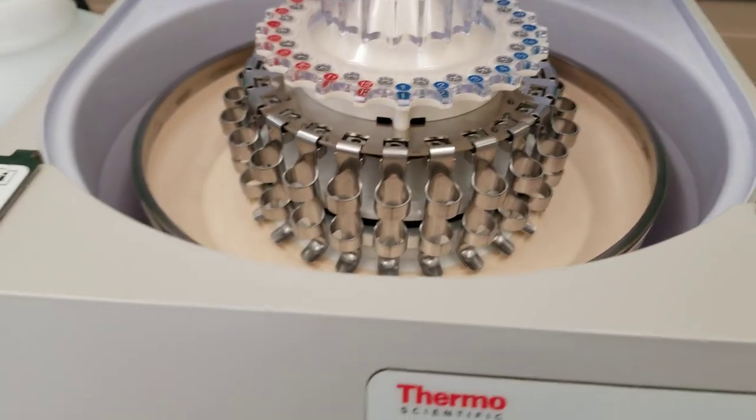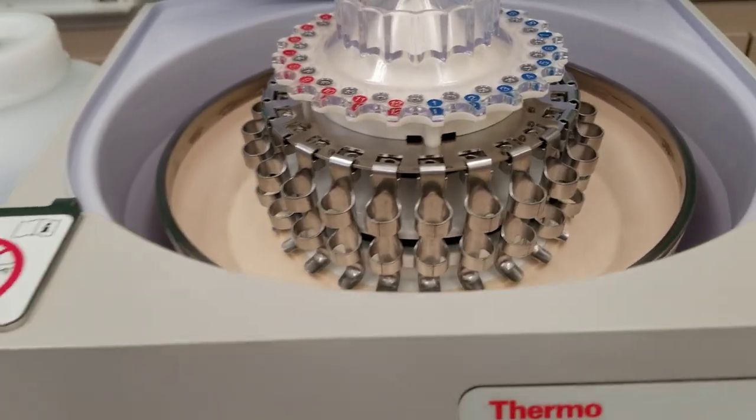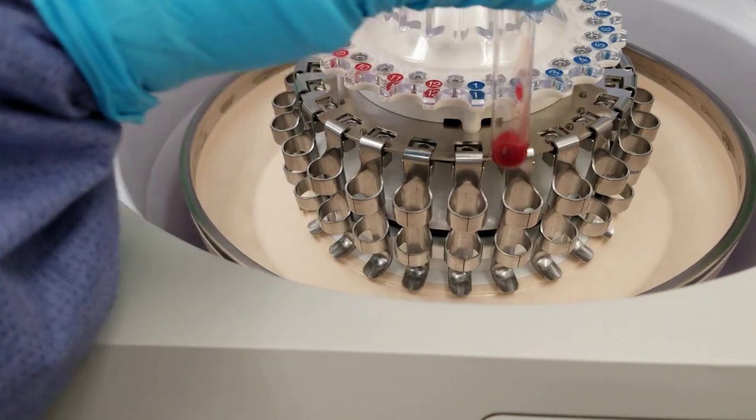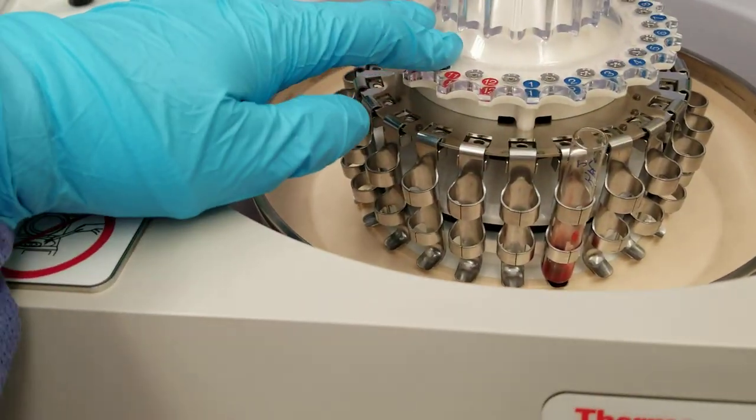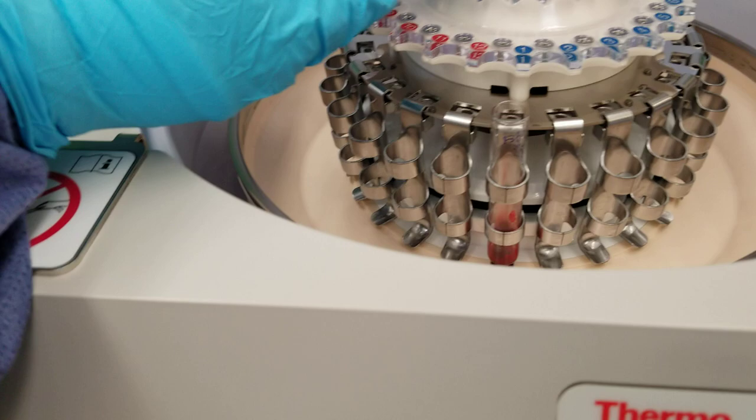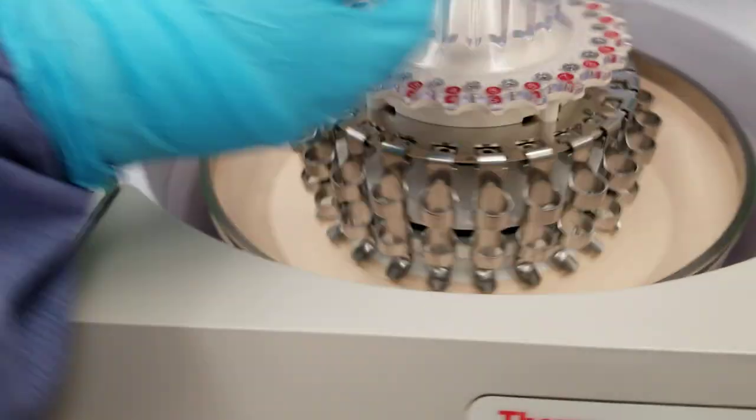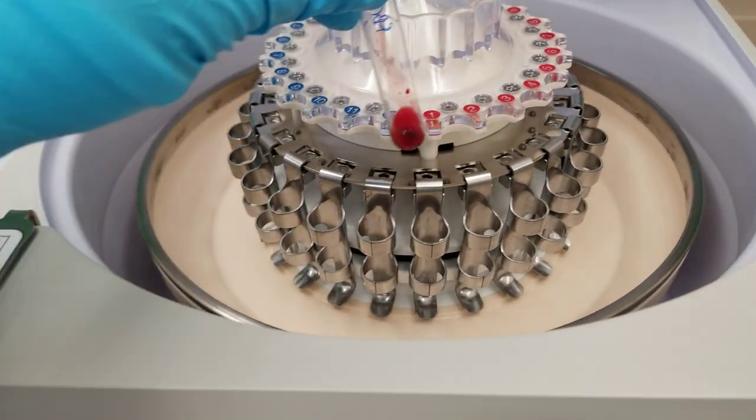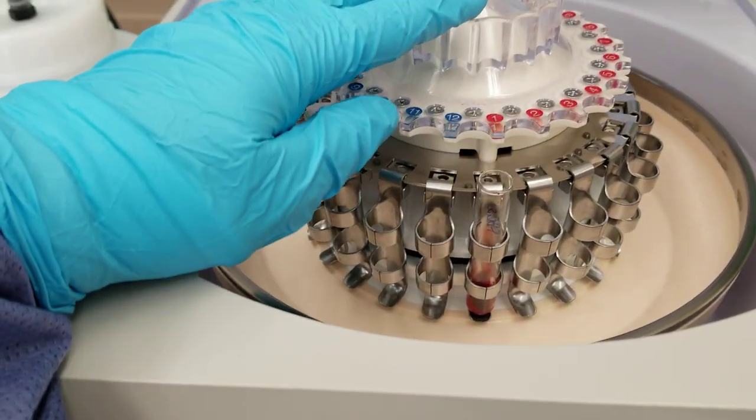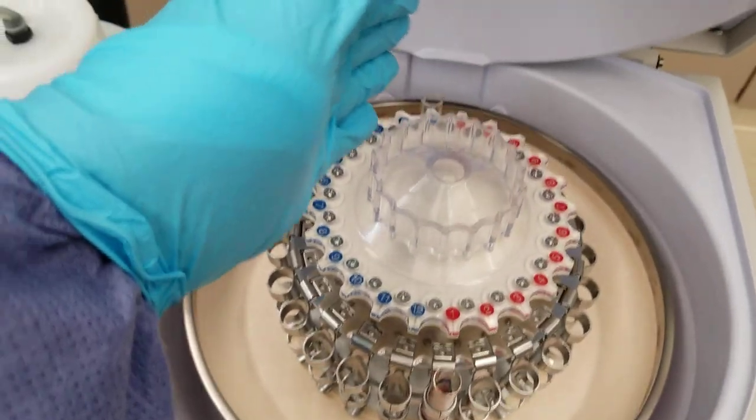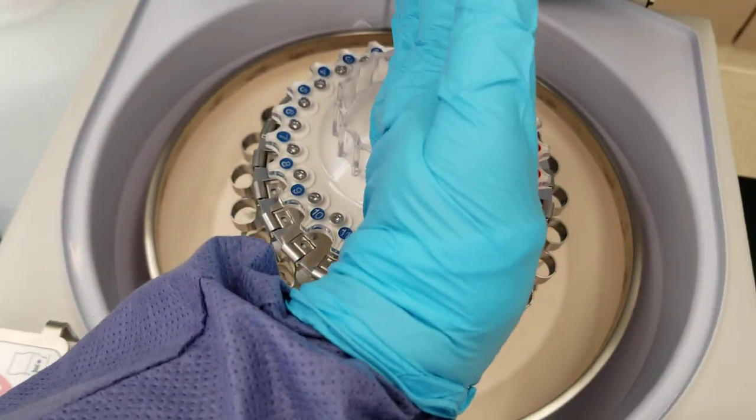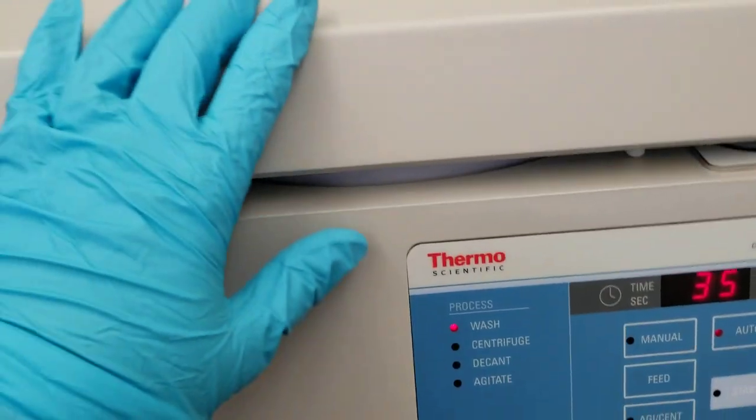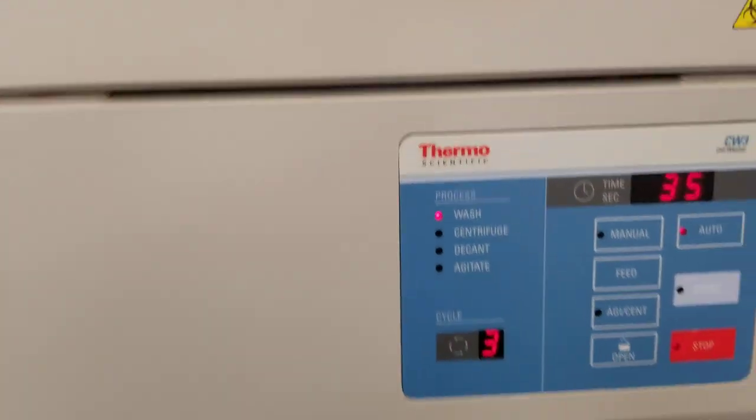So let's actually run a cycle. Okay, we have some red blood cell tubes. Okay, I'm putting it on one in the blue and I'm going to put it on one in the red. That ensures that I have it across the rotor from each other, across each other through the rotor. Okay, we're going to close it up. We're not slamming it. You're just going to press it gently close.